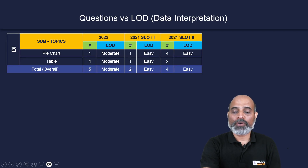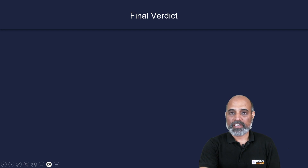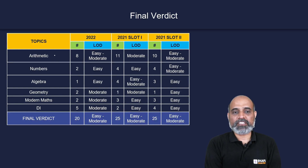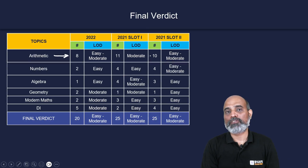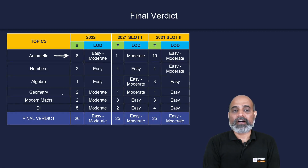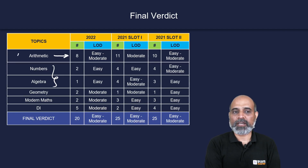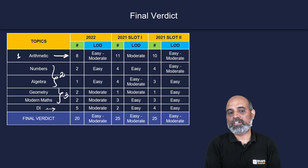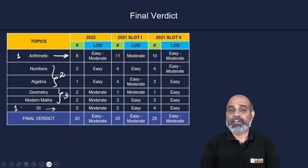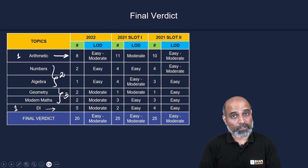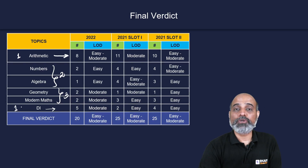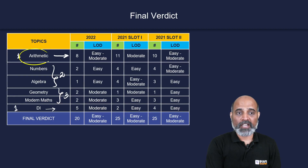Looking at the final verdict on important topics: arithmetic is the most important, as it has always had the maximum questions — almost half of total QA questions. The next most important topics are algebra and numbers. Geometry and modern maths are less important. DI is as important as arithmetic — at least 20% of questions come from DI, and in 2022, five out of 20 questions (25%) were from DI. To maximize your score, do not leave out arithmetic and DI.